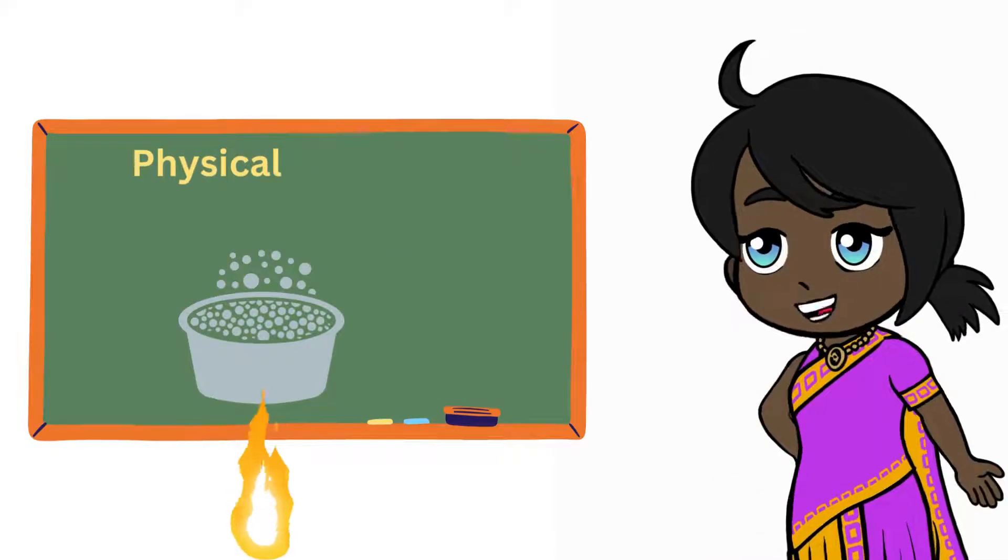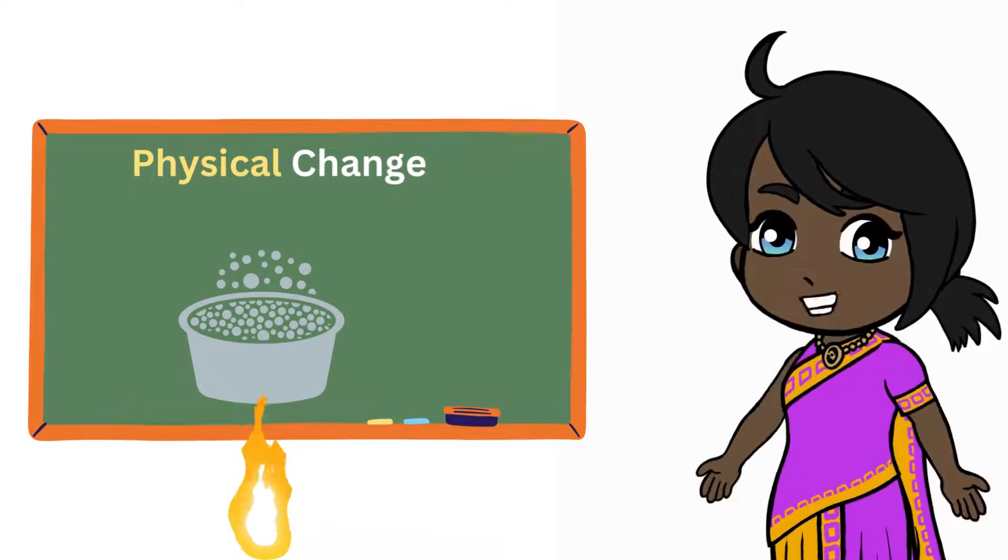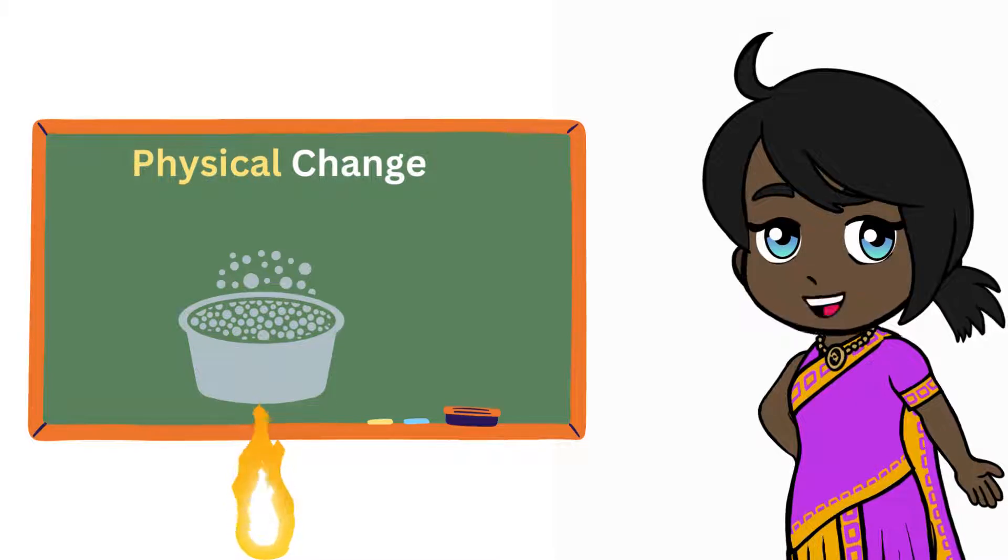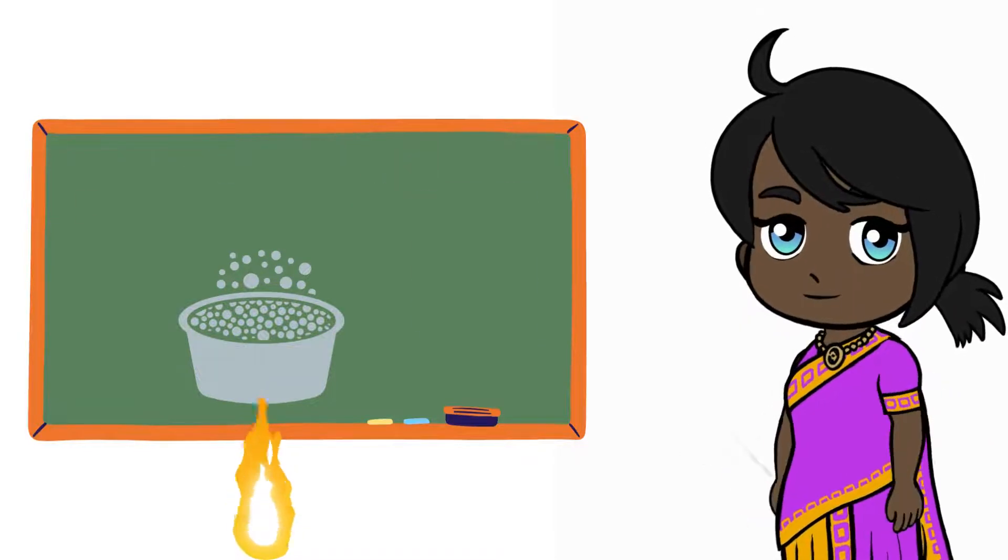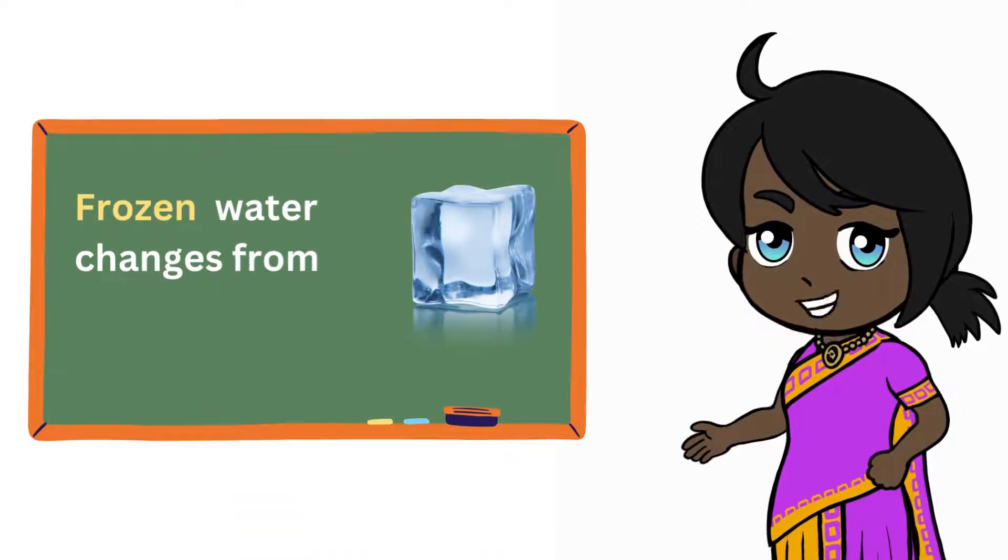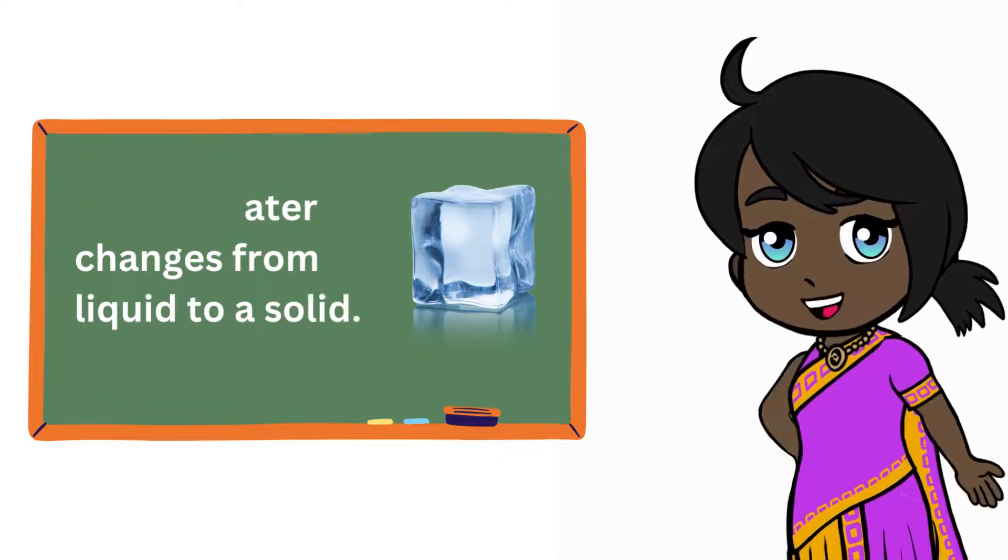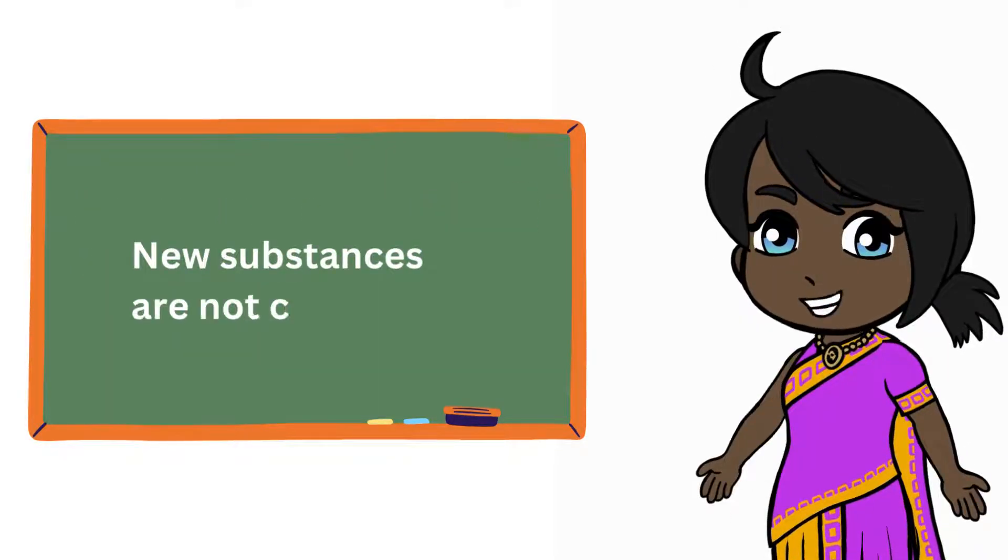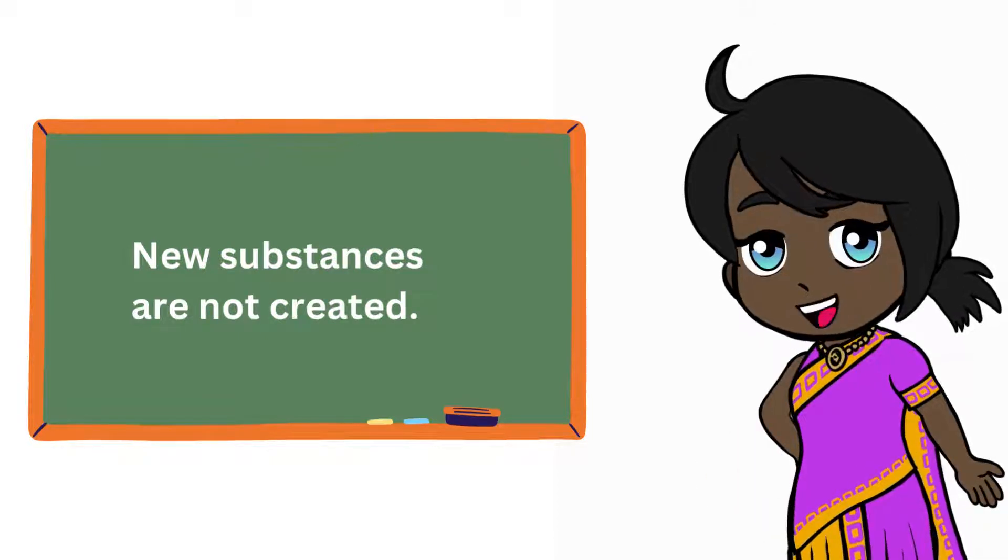When matter changes from one state to another, we call this a physical change. For example, when water is heated, it changes from a liquid to a gas. When water is frozen, it changes from a liquid to a solid. These changes do not create new substances, they just change the state of matter.